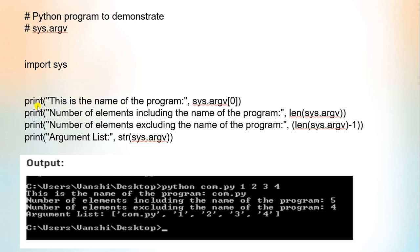In this command line, argv[0] stores com.py, argv[1] stores 1, argv[2] stores 2, and so on. So when we print sys.argv[0], it will display com.py — the file name. com.py is the first index, so argv[0] is the filename, argv[1] is 1, argv[2] is 2, argv[3] is 3, and so on.